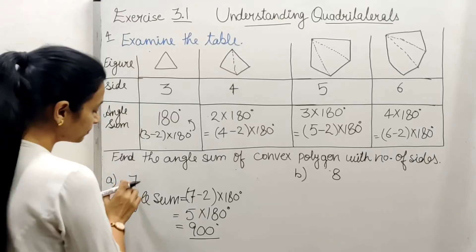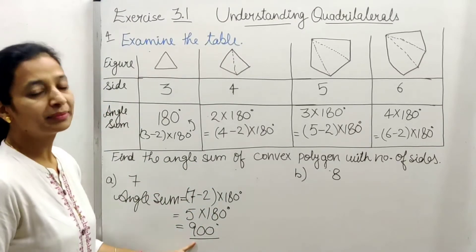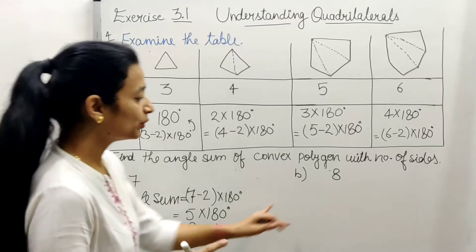So which is how many? This polygon is, which side is 7, which angle sum is how many? 900. Now, next.